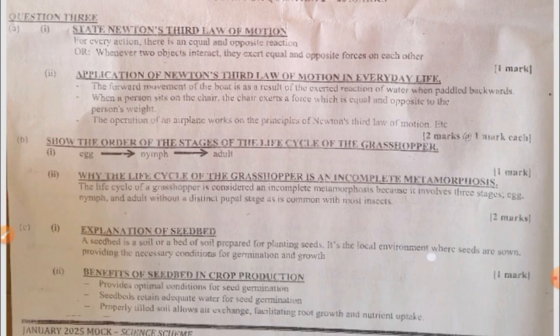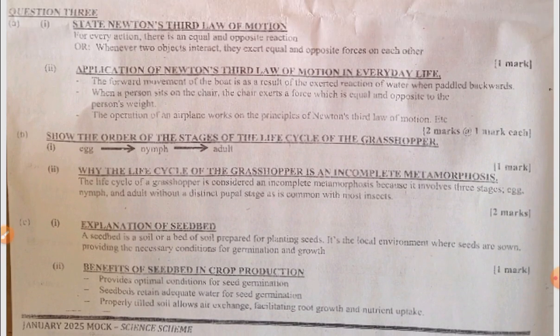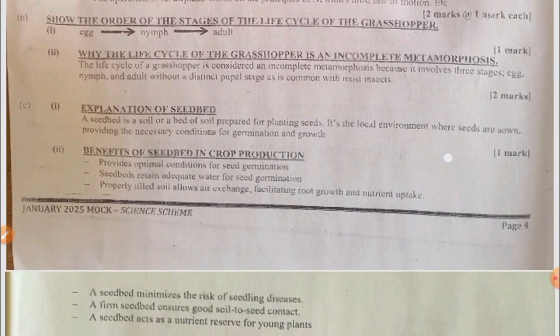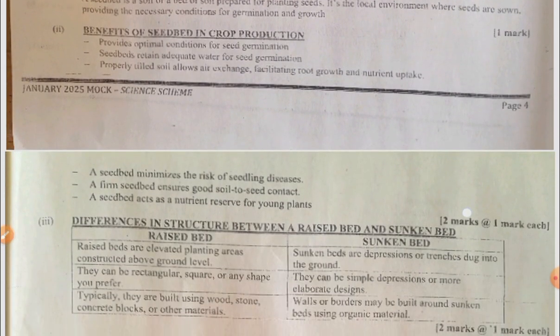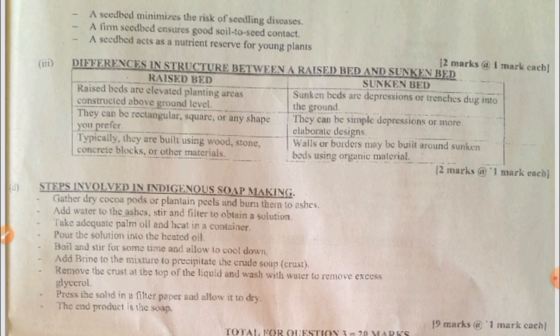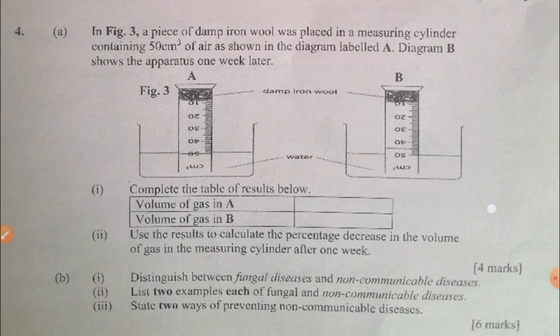Looking at the answers: for Newton's third law of motion, you are supposed to state it and give its application — specifically the operation of an airplane. Then the correct order of the life cycle of a grasshopper is provided, followed by an explanation of what a seedbed is and the benefits of a seedbed in crop production. The difference between a raised bed and a sunken bed is also covered, and the correct arrangement of steps in making indigenous soap.